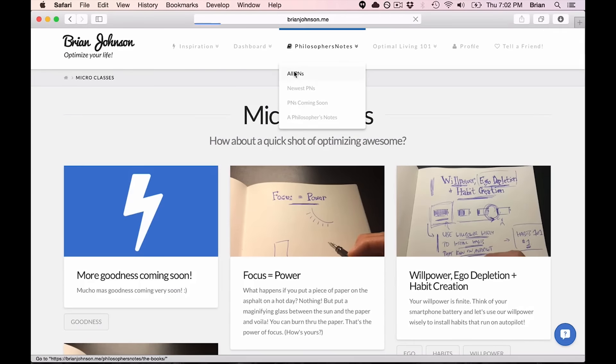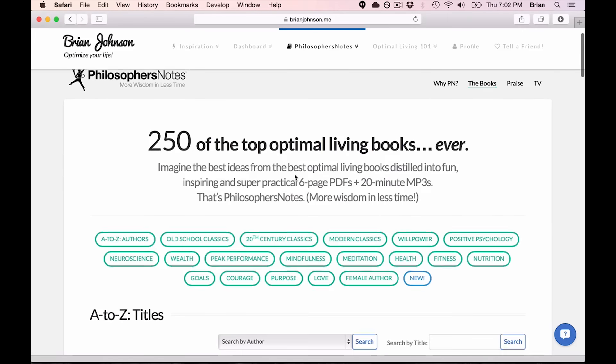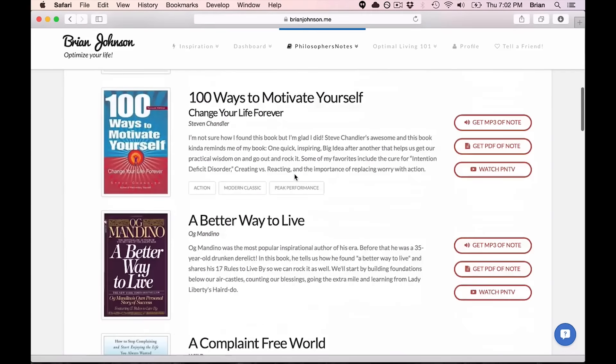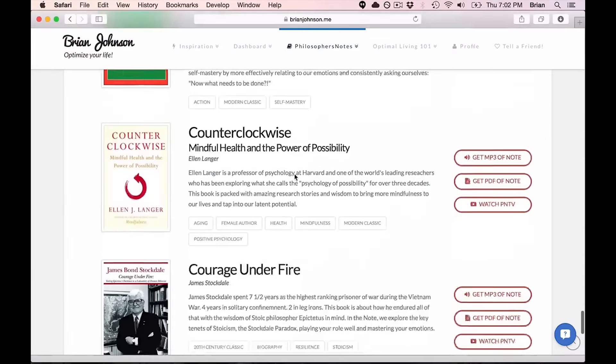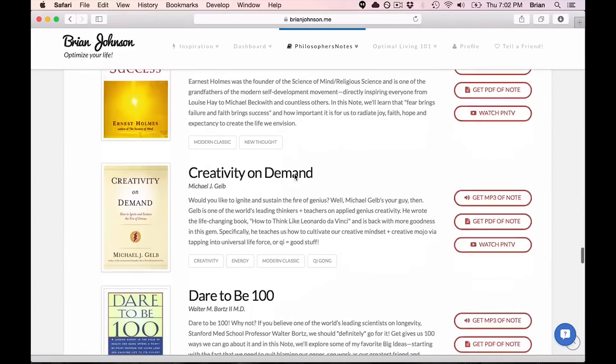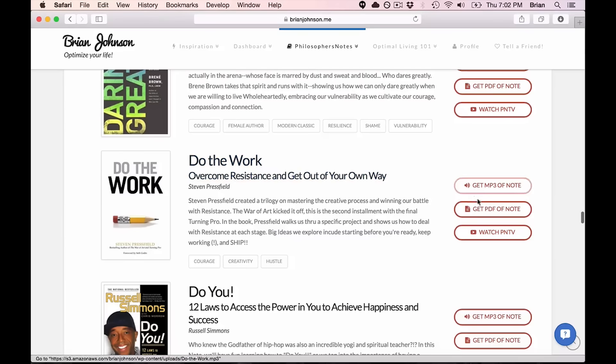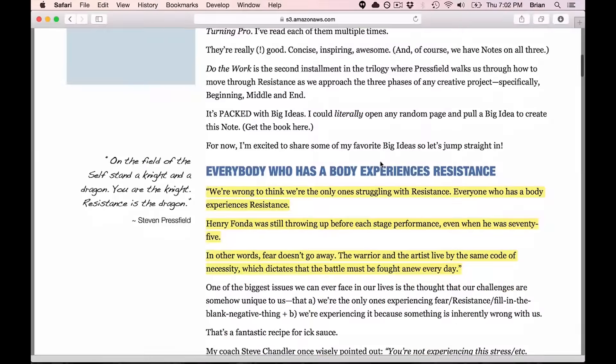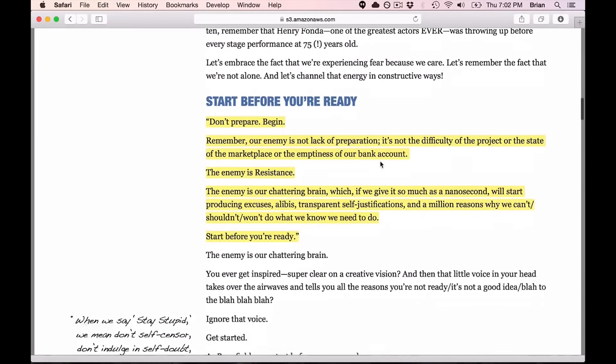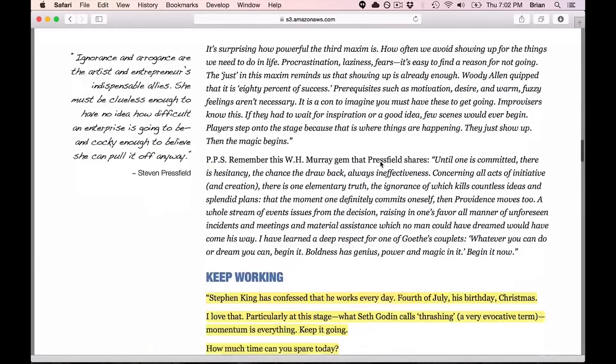In addition to that, you get access to every single one of our Philosopher's Notes. We now have over 250 Philosopher's Notes on some really good books. A lot of them—you're familiar with the PNTV videos if you've watched many of those, but we also have PDFs and MP3s of our Philosopher's Notes. So here, let's take a look at what a PDF looks like. This is an example of a Philosopher's Note. It's a six-page PDF where I basically share some of my favorite thoughts, riff on it, talk about how other teachers say the same things, and give you a nice playful kick in the butt to go out and apply the wisdom.